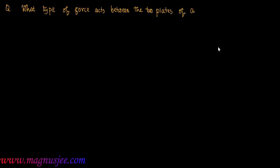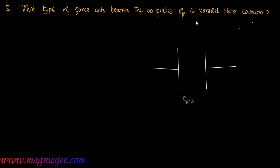What type of force acts between the two plates of a parallel plate capacitor? In the diagram, we have a parallel plate capacitor. To one plate there is positive charge, plus Q, and on the other plate there will be negative charge, that means minus Q charge.